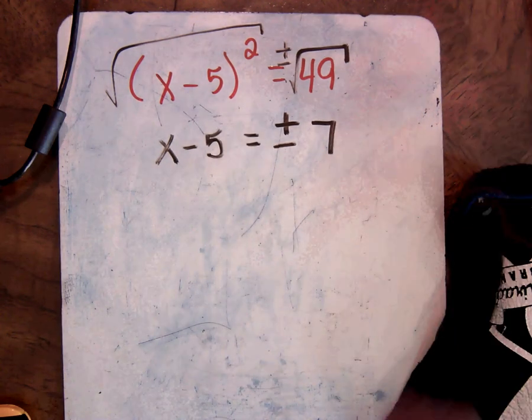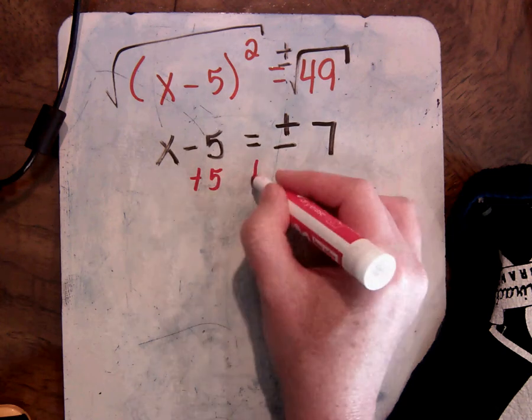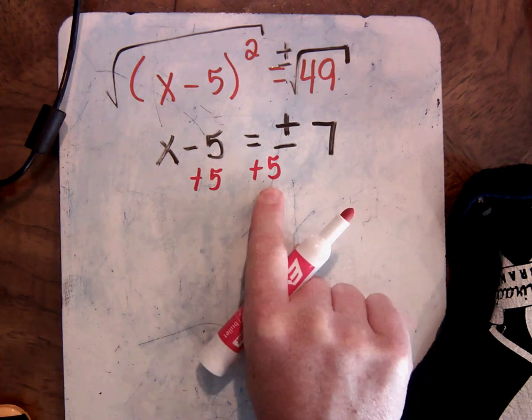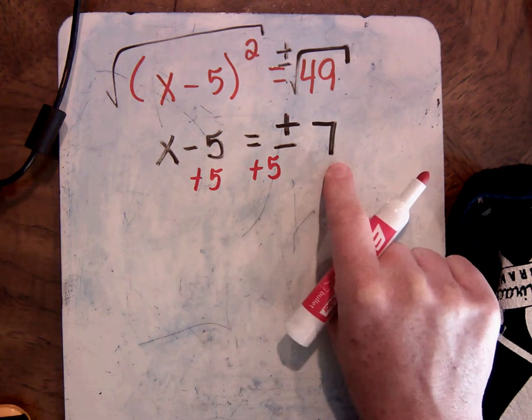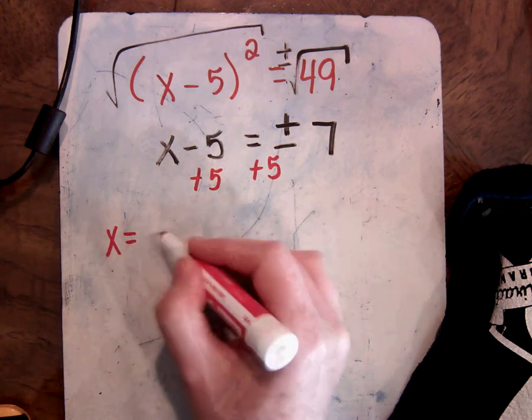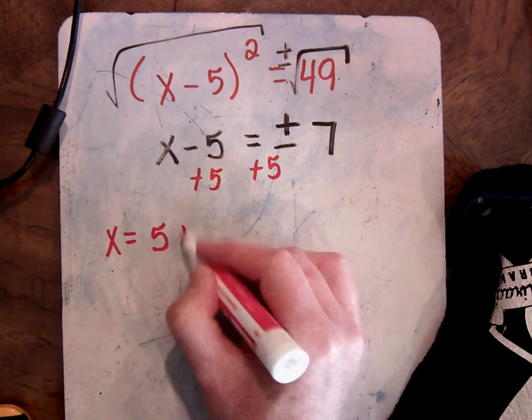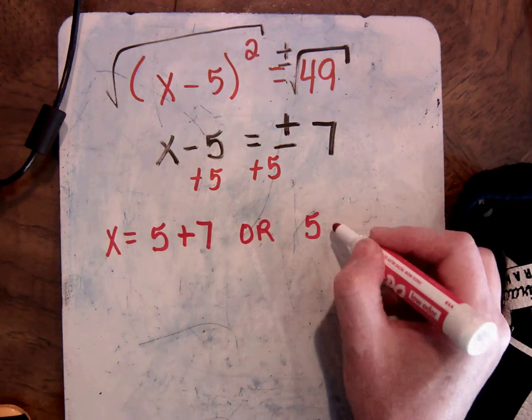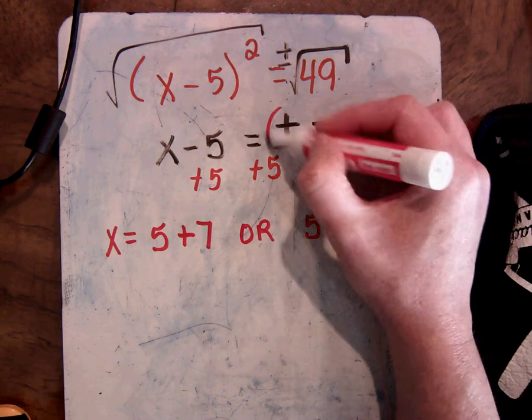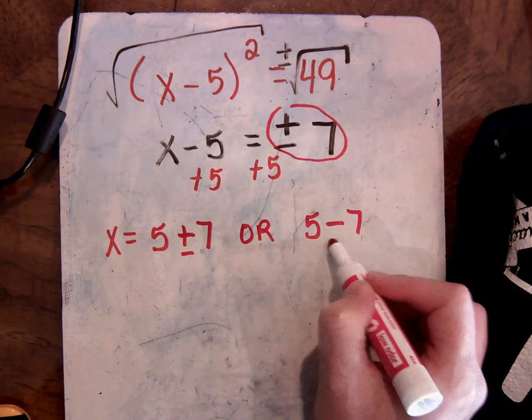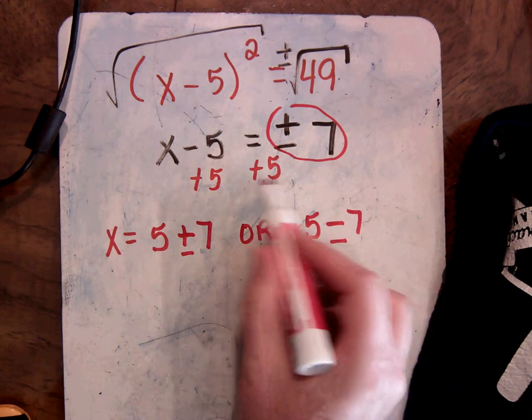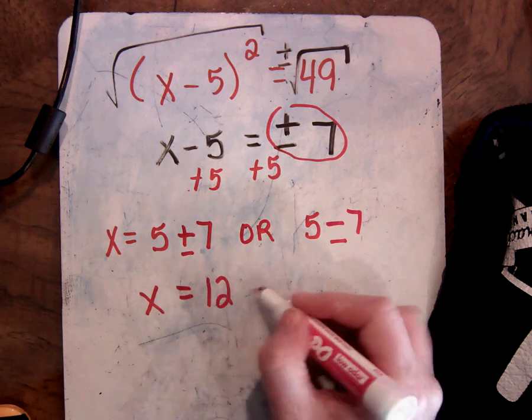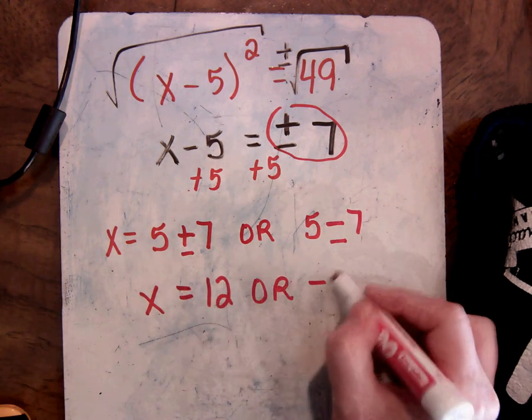And then the next step would be to add 5. Now, be really careful here. This is one place where everybody was messing up, or some people were. It's not positive or negative 5. It's positive or negative 7. So, x is going to equal 5 plus 7, or it's going to equal 5 minus 7. Remember, this is the part that's positive or negative. The 5 is still positive. It's still adding. So, that means x equals 12, or negative 2.